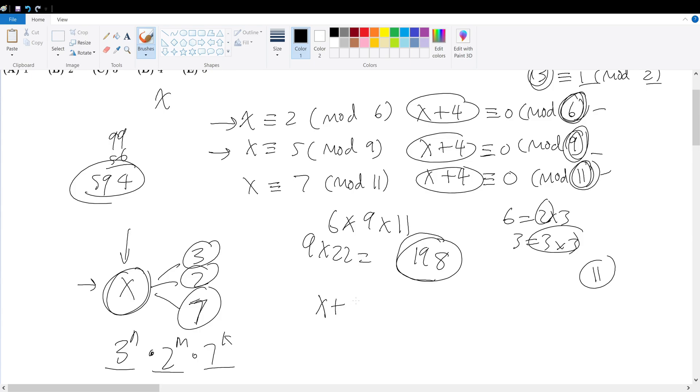So x plus 4, right, can equal 198, right? Because 198, right, is divisible by everything. So if we were to say like that, then what can we say about x? Well, we can continue on with this pattern. Because if x plus 4 is equal to 198, then x must be equal to 194.